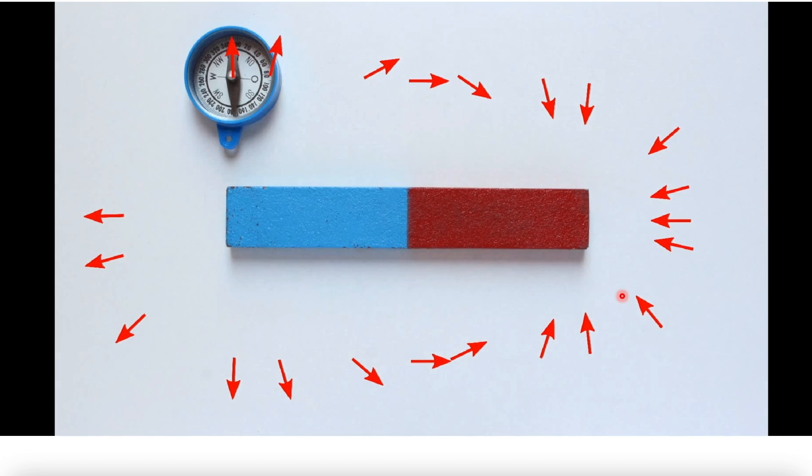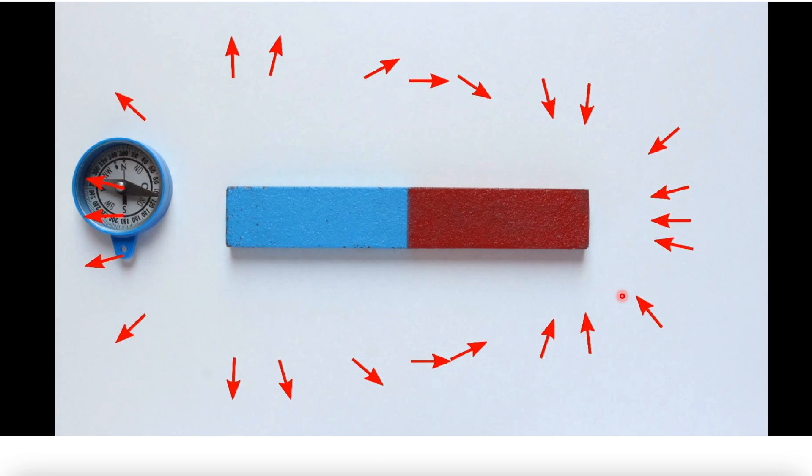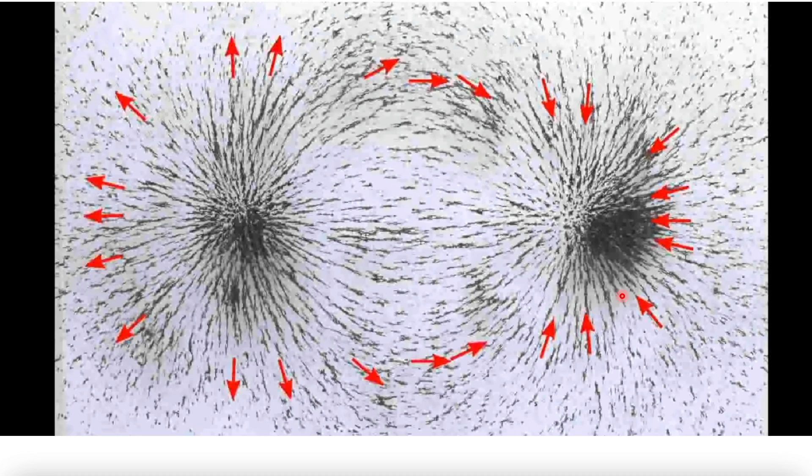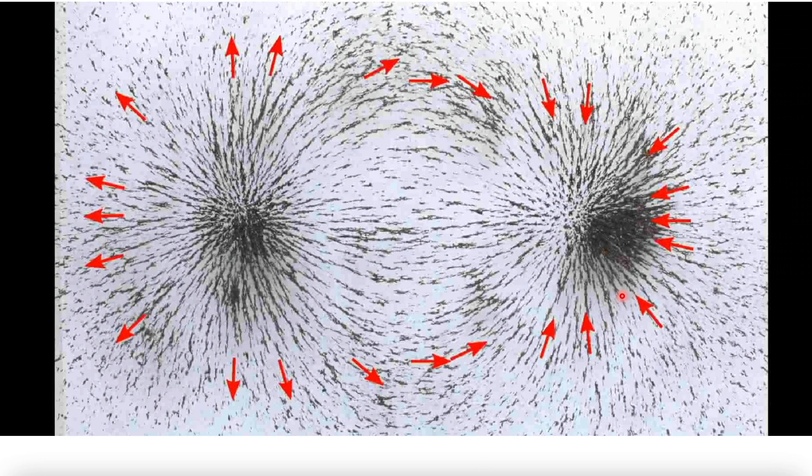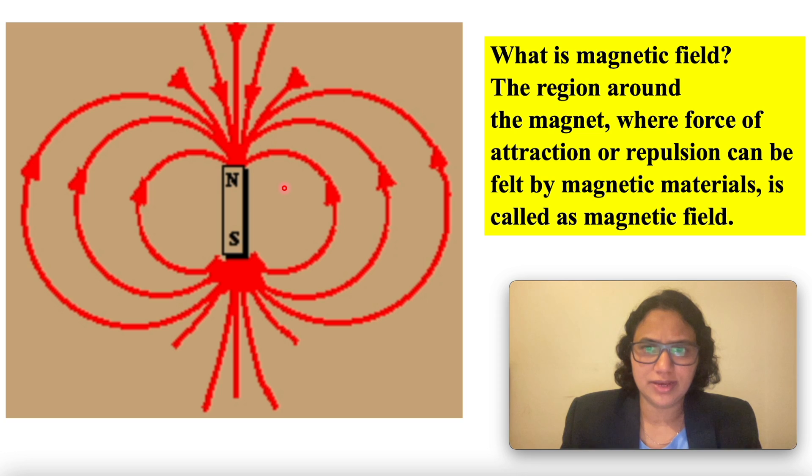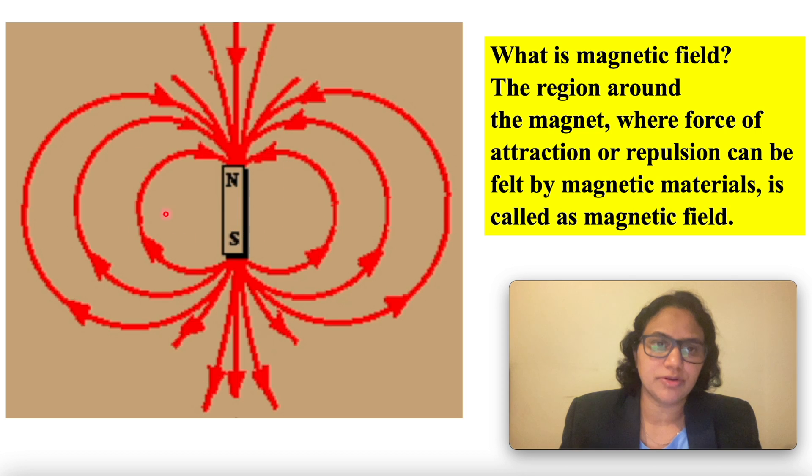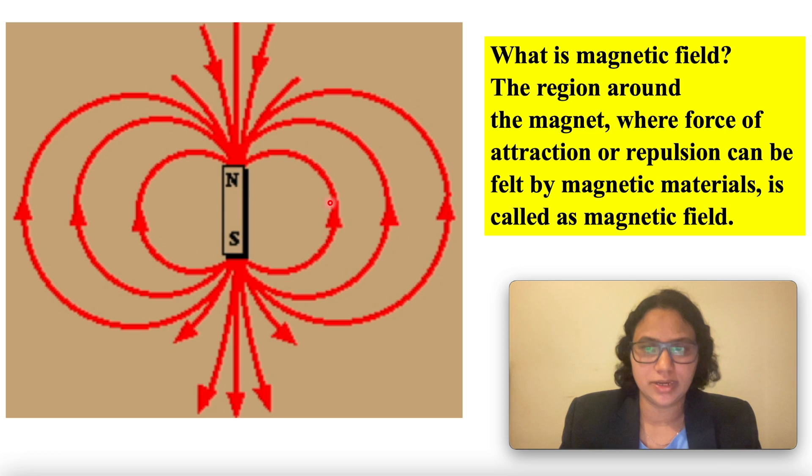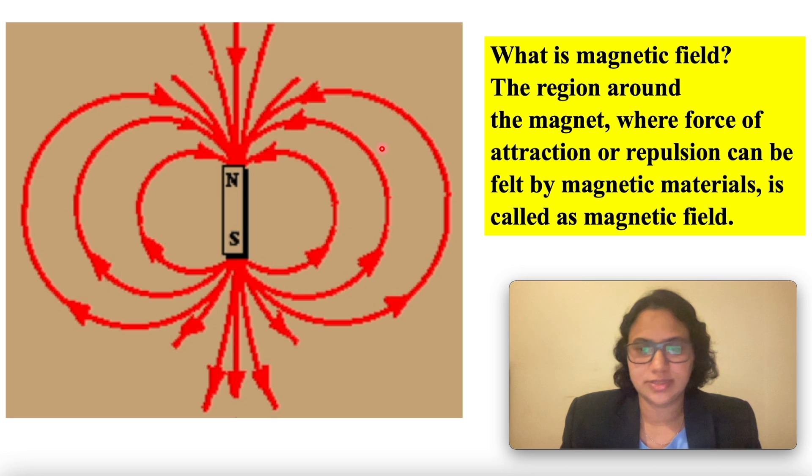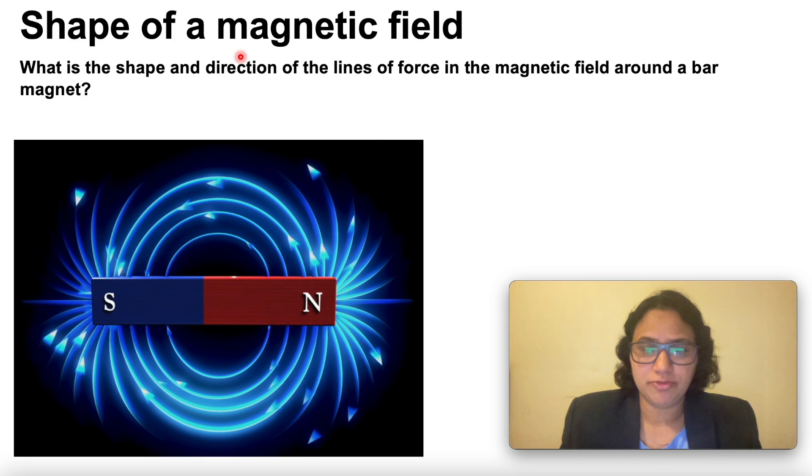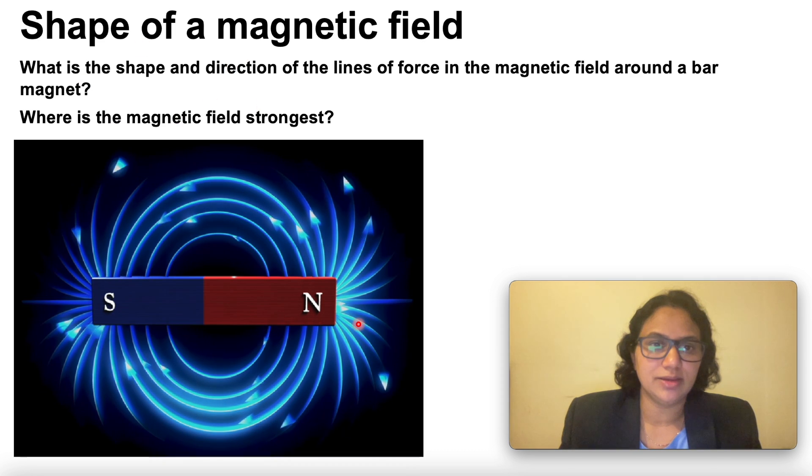All these red arrows indicate the direction of the magnetic field lines. What is a magnetic field? It is a region around the magnet where the force of attraction or repulsion can be felt by magnetic material. What is the shape of a magnetic field and where is it strongest? The magnetic field lines are directed from the north pole and entering to the south pole.